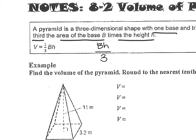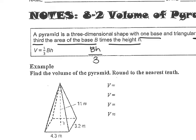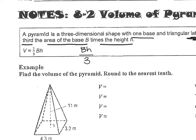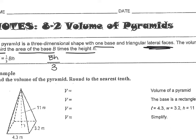What does that big B stand for? Base — the area of the base. Not just one number; it means you're going to have to find the area of whatever your base is. It could be a square, a rectangle, or even a triangle. Whatever formula you need to use to find that area, that's what you'll do. The big B stands for area of the base.